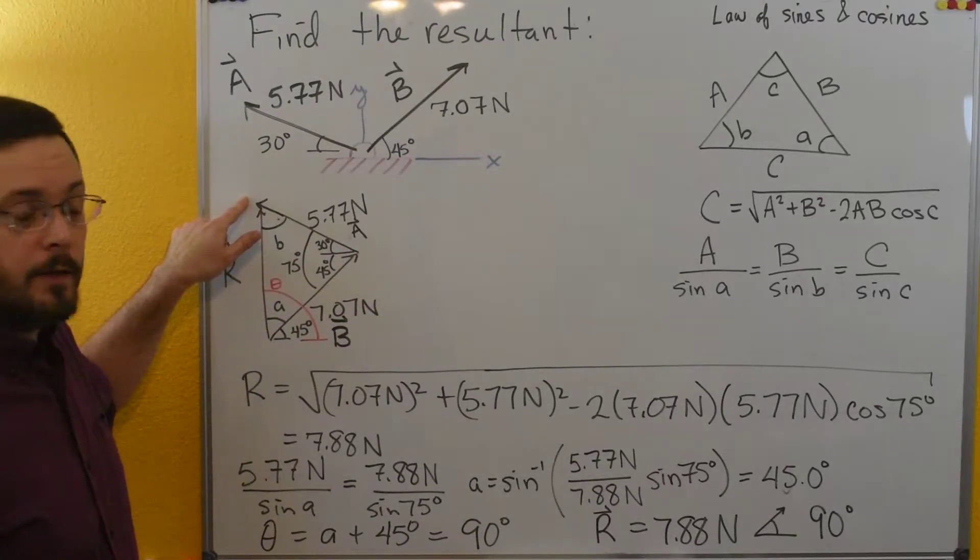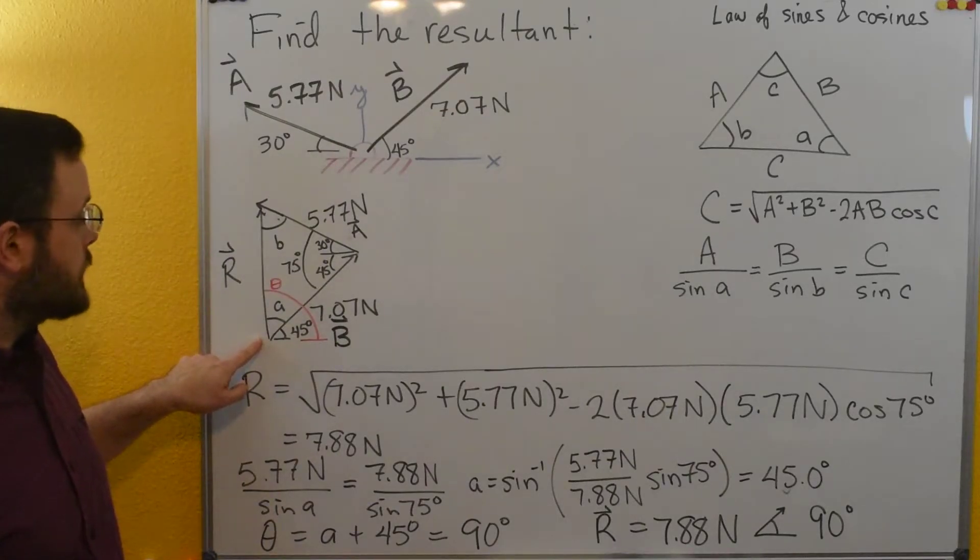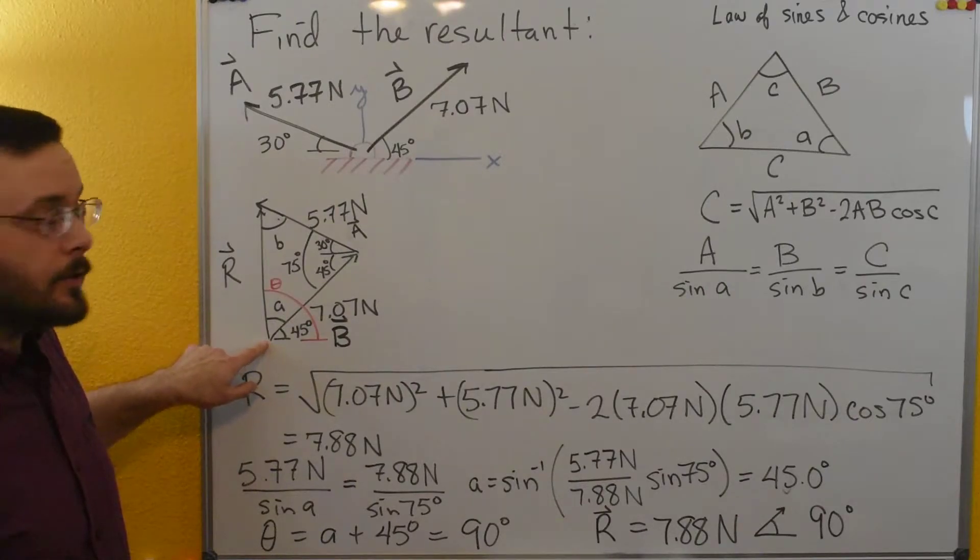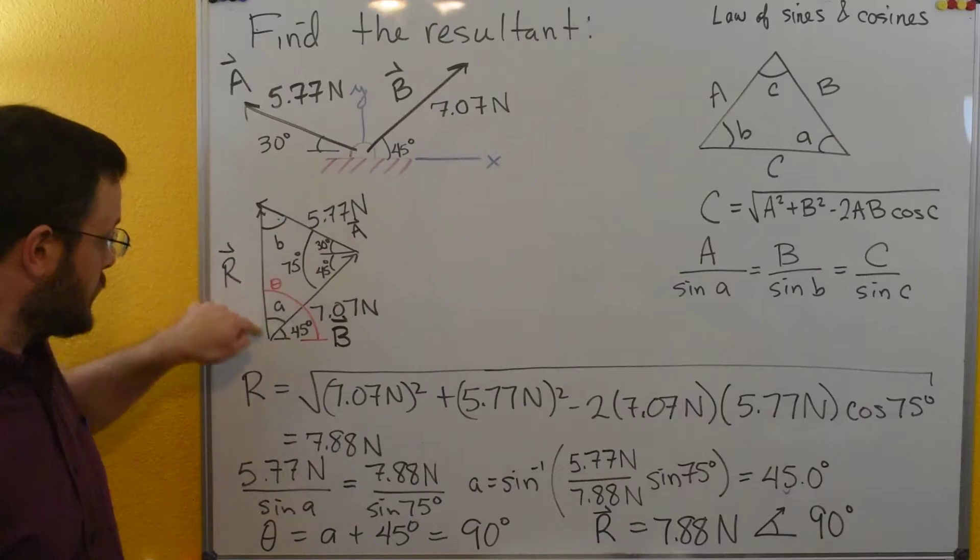And then to finish my triangle, my resultant, which is just a plus b, is equal to starting where b starts and then going to the end here where b ends. So here's my triangle.